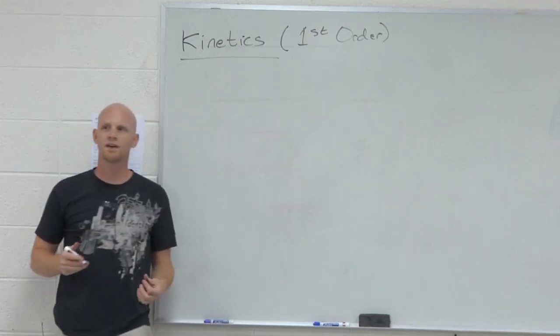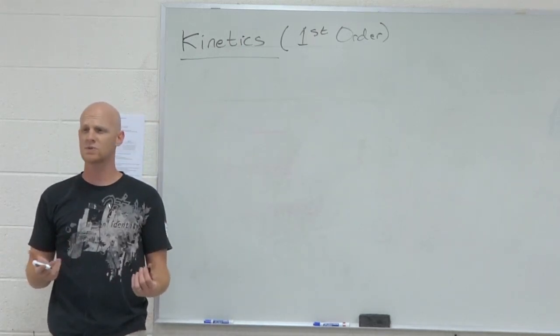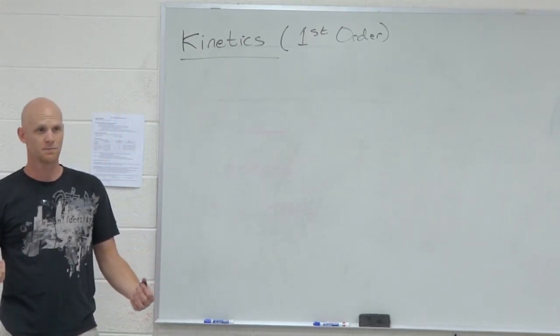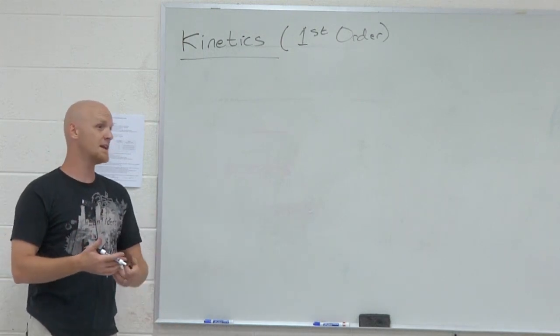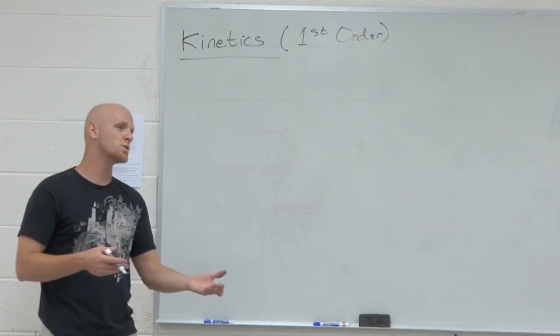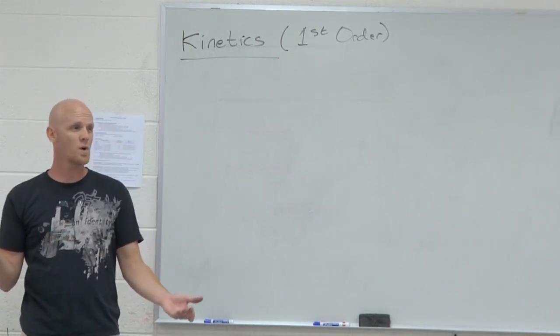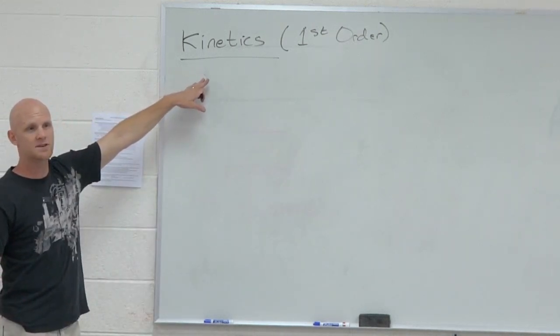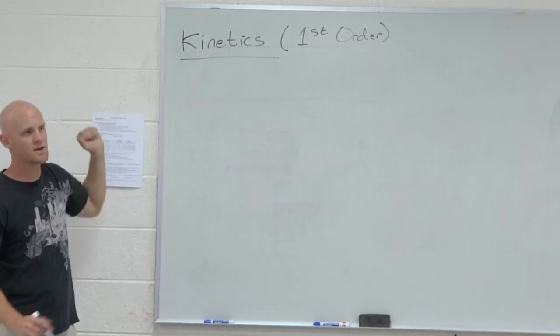For nuclear decay we don't have to tell you the order because we expect you to remember that they're all first order. In the kinetics chapter any given reaction could have been zero order, first order, second order, and depending on what order you would know which equation to use. Well now for any nuclear reaction you always know to use the first order equations.